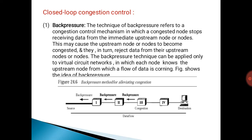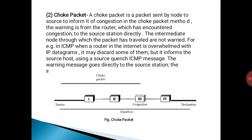We can see this in the figure. Second is choke packet. A choke packet is sent by a node to the source to inform it of congestion. In the choke packet method, the warning goes directly from the router which has encountered congestion to the source station. The intermediate nodes through which the packet has traveled are not warned. For example, in ICMP, when a router is overwhelmed with IP datagrams, it may discard some and inform the source host using a source quench ICMP message. The warning message goes directly to the source station.